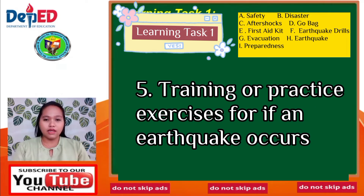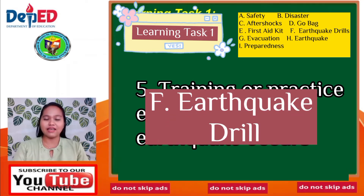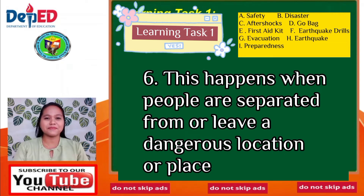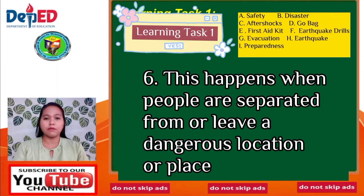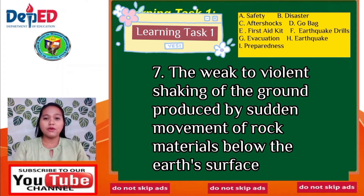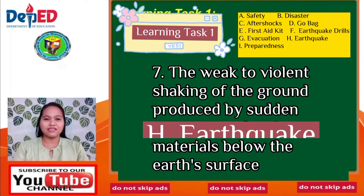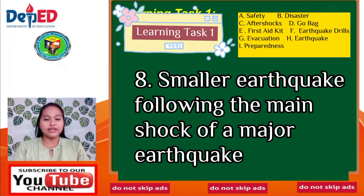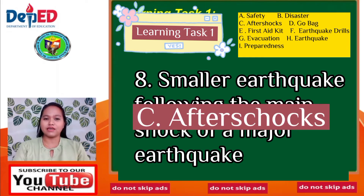Number 5: Training or practice exercise for if an earthquake occurs. The answer is Letter F — Earthquake Drills. Number 6: This happens when people are separated from or leave a dangerous location. The answer is Letter G — Evacuation. Number 7: The weak to violent shaking of the ground produced by sudden movement of ground materials below the earth's surface. The answer is Letter H — Earthquake. Number 8: A smaller earthquake following the main shock of a major earthquake. The answer is Letter C — Aftershocks.